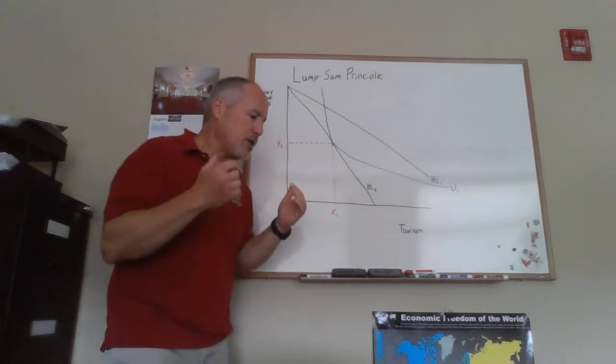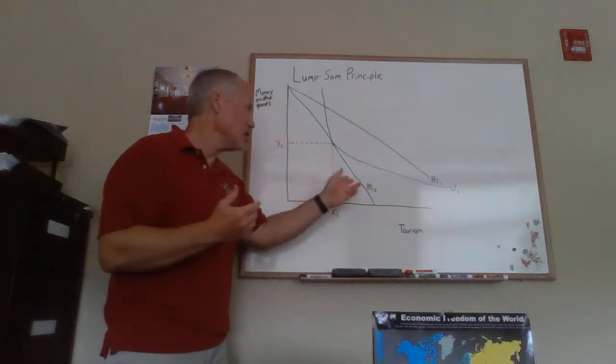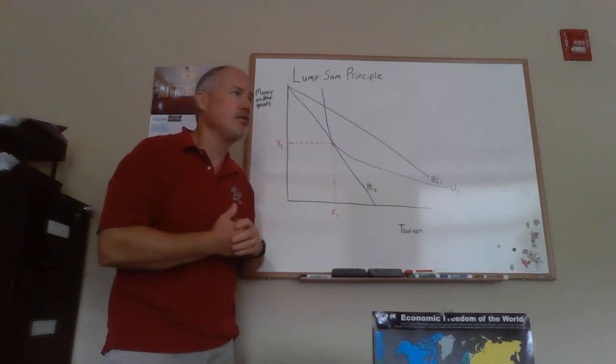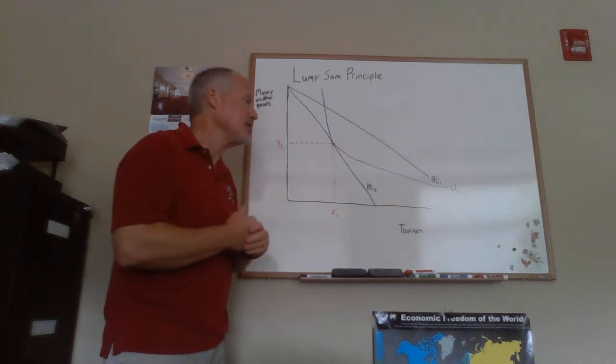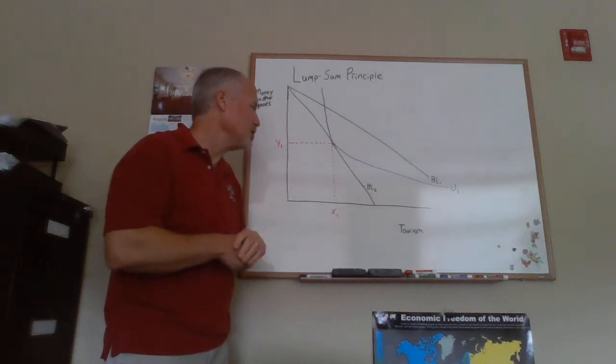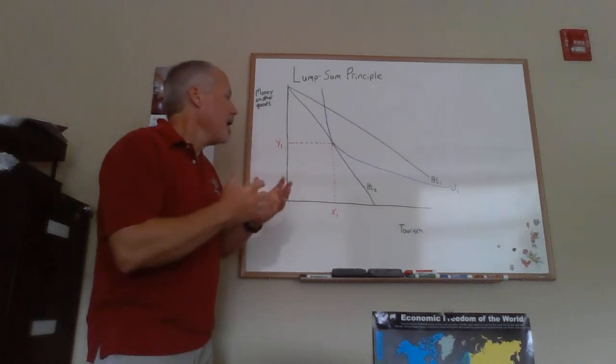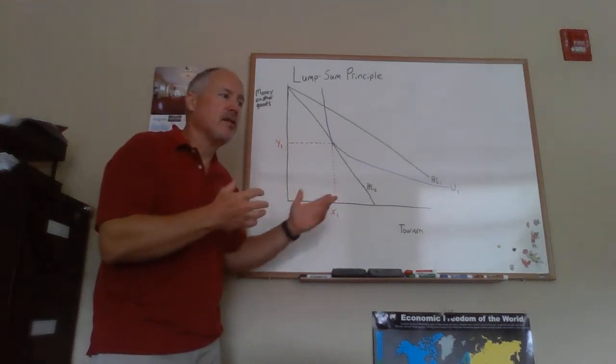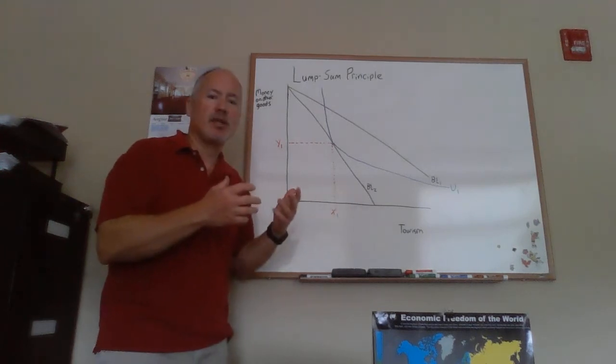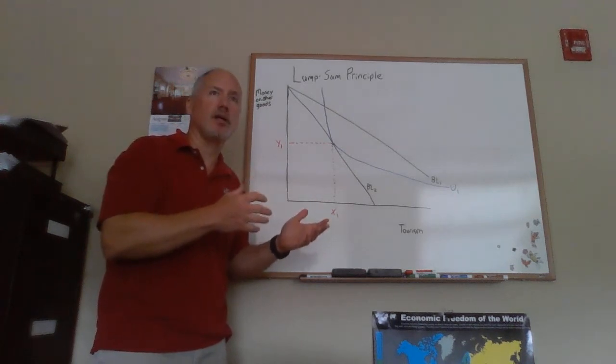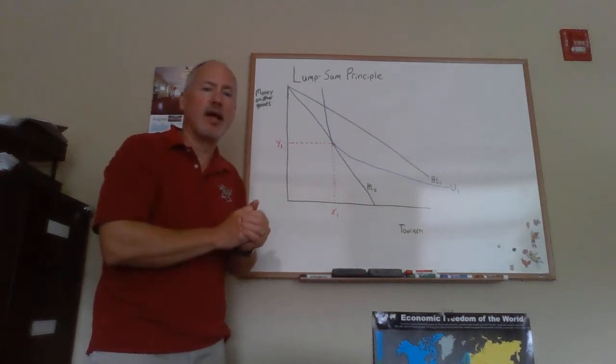Now we want to compare two different taxes. This is the commodity tax that has distorted the price of tourism by boosting it, in effect being passed on to consumers here. The government needs to raise revenue, so we're going to compare this commodity tax with a tax on income that would raise the same amount of money.